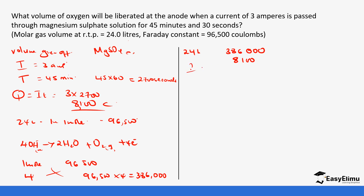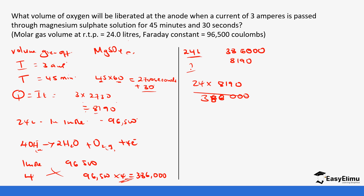The actual electricity used is 8,190 coulombs. So the volume = (24 × 8,190) / 386,000 = 0.5092 litres. That is the volume of oxygen liberated. Note the correction: the time was 45 minutes and 30 seconds, giving 2,730 seconds, not 2,700.